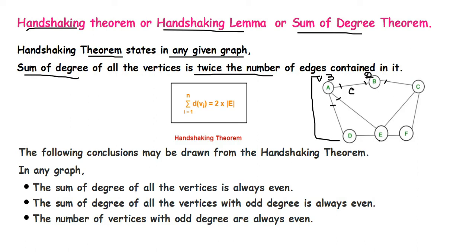If a vertex such as E has a self-loop, that loop is counted twice toward the degree. So counting all connections for E — one, two, three, four, five, six — the degree of E is six.